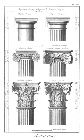Mullion: vertical bar of wood, metal, or stone which separates two or more windows in a series.